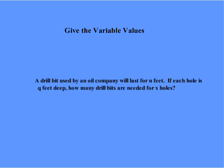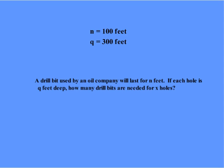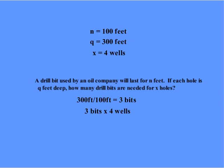So let's give these things value. Let's say that n, the number of feet a drill bit will last, is 100 feet. And let's say that each of these wells is q, or 300 feet deep. And we want to do four wells. You'd just divide 300 feet by 100 feet to find out how many bits you're going to need — so you'd need three bits per hole. If I'm going to do four wells, that's three times four.